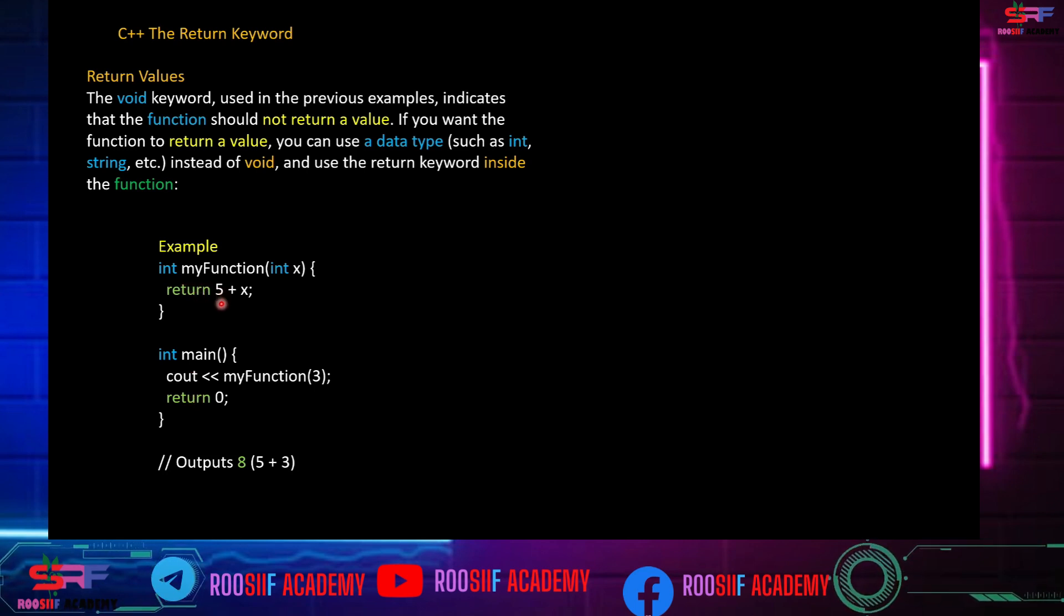If you call int main in the application program, and you want to cout myFunction, you pass the argument. The argument is an integer.